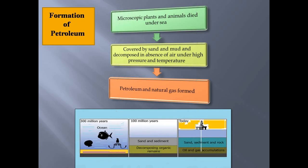The formation of petroleum takes place as follows: microscopic plants and animals died under the sea, were later covered by sand and mud, and decomposed in the absence of air under high pressure and temperature. By this process, petroleum and natural gas are formed, so generally natural gas is also found along with petroleum.